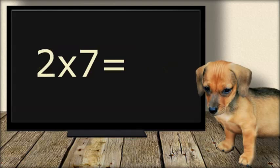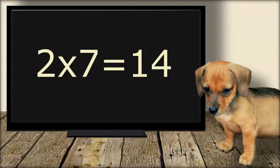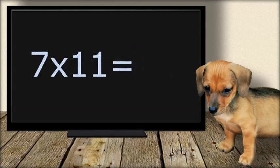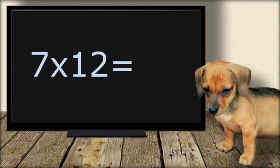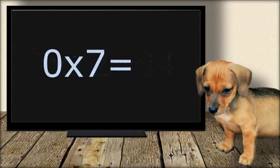Two times seven equals forty. Seven times eleven equals seventy-seven. Seven times twelve equals eighty-four. Zero times seven equals zero.